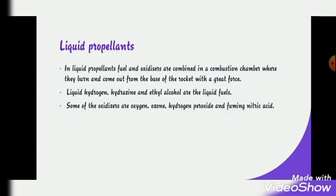Liquid hydrogen, hydrazine, and ethyl alcohol are the liquid fuels. Some of the oxidizers are oxygen, ozone, hydrogen peroxide, and fuming nitric acid. The oxidizer and liquid propellant combined in the combustion chamber burn and come out from the base of the rocket with great force.